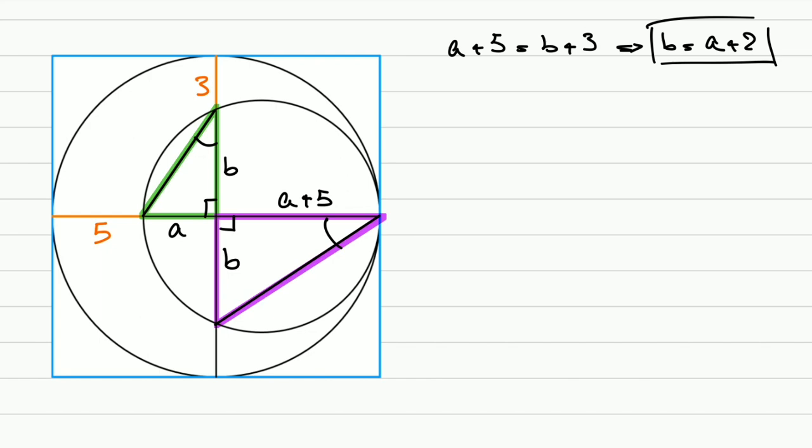So we have some ratios. For the green triangle, the ratio of A to B is equal to, for the purple one, the ratio of B to A plus 5. Now let's apply this.